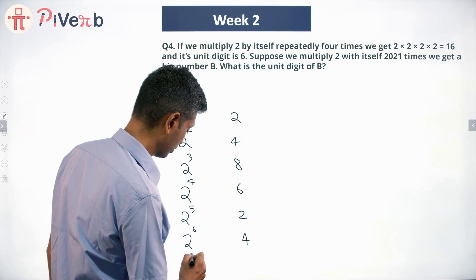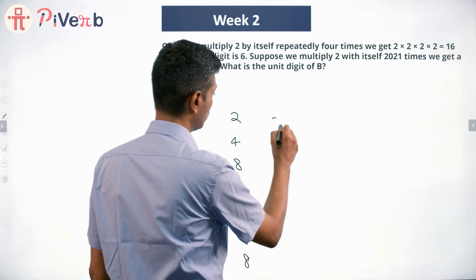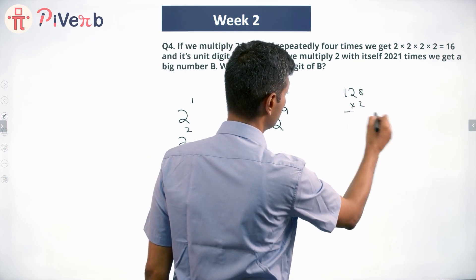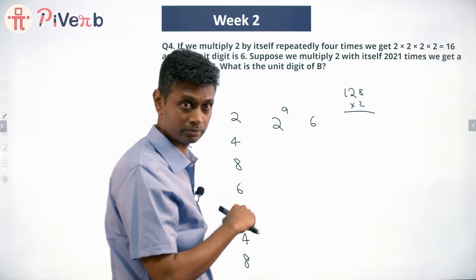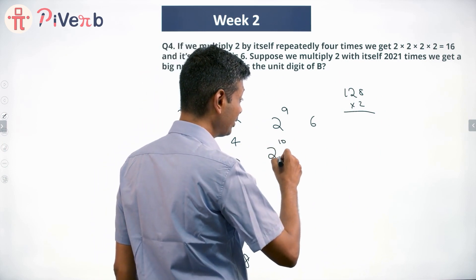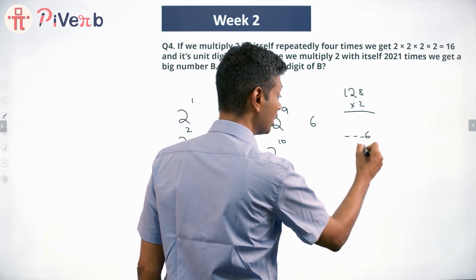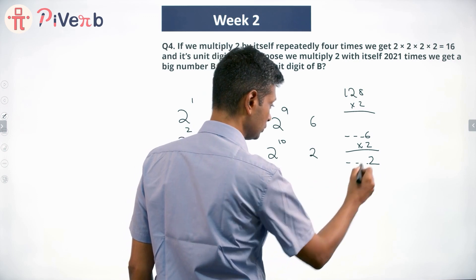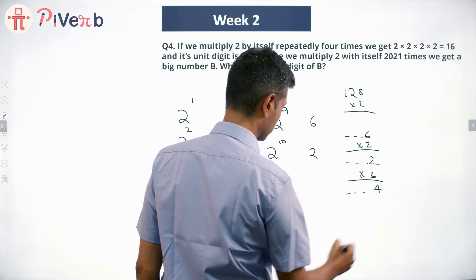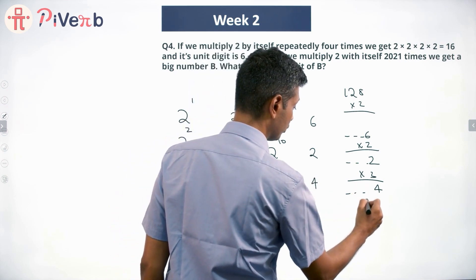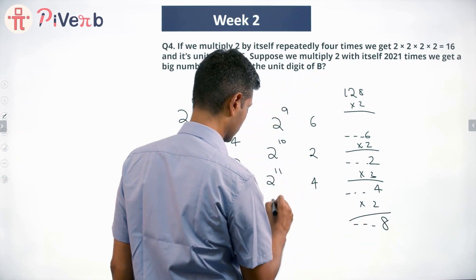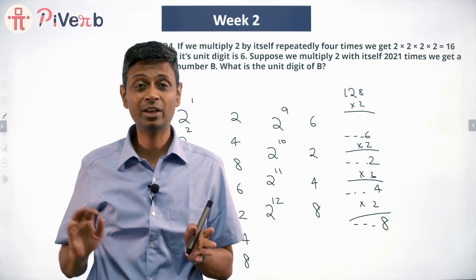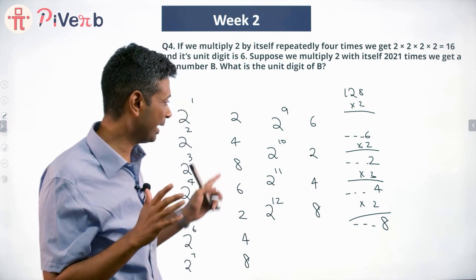2^7 is 128 — ends in 8. For 2^8, I write it as 128×2: 2×8=16, so it ends in 6. I don't care about the whole number. For 2^9 I know 2^8 ends in 6, multiply by 2: 2×6=12, ends in 2. 2^11 ends in 4, 2^12 ends in 8. The rule is: take the units digit of the previous number, multiply by 2, and keep only the units digit — forget the carry.